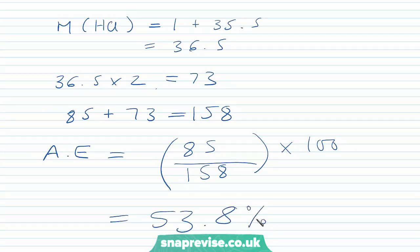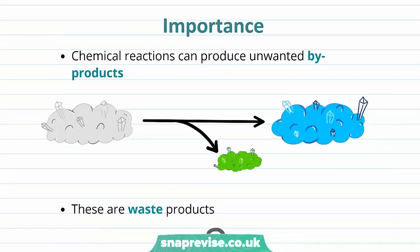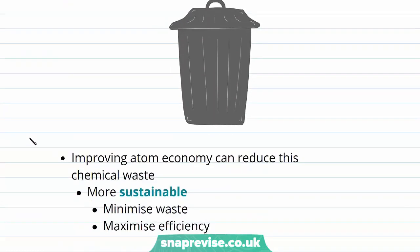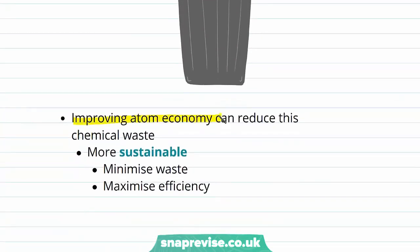Now let's look at the importance of atom economy. Chemical reactions don't always produce one product — they can produce unwanted by-products, which we call waste products. Improving the atom economy of a reaction can reduce chemical waste and make reactions more sustainable by minimising waste and maximising efficiency. On a large industrial scale, improving sustainability is incredibly important.